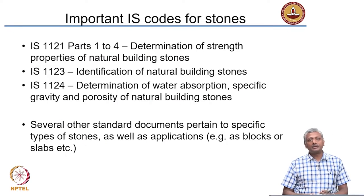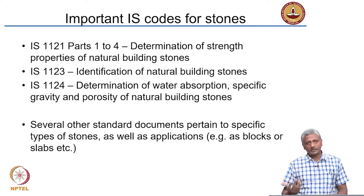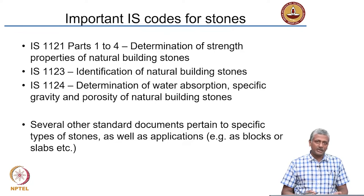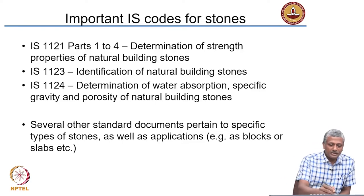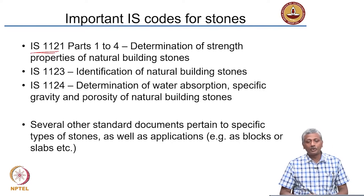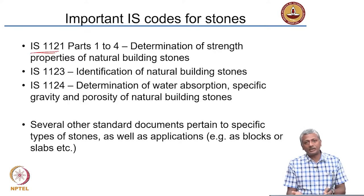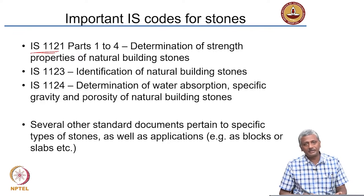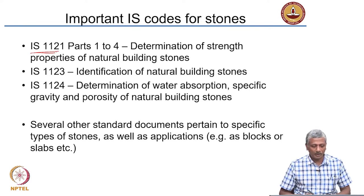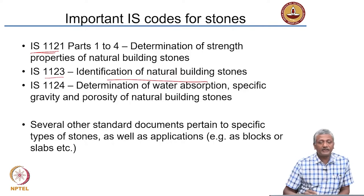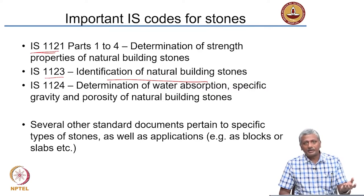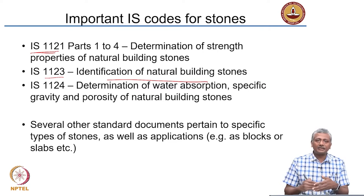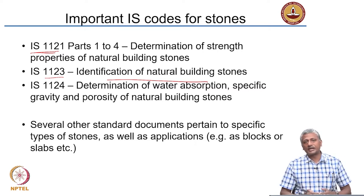To identify whether a particular stone is good for construction, the Indian Standard provides guidance. IS 1121, parts 1 to 4, talks about the determination of strength properties of natural building stones — how to determine strength, what size and orientation of specimen to use, and whether to test it wet or dry. Not just compressive strength, but also tensile strength and shear strength determination are covered in IS 1121. IS 1123 covers identification of natural building stones based on mineralogy and mechanical properties, giving methodologies to identify what type of stone you have.